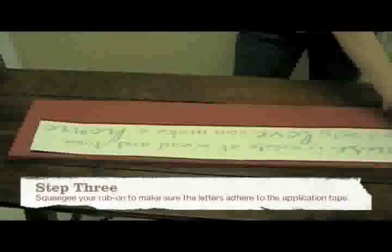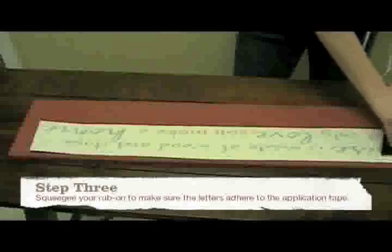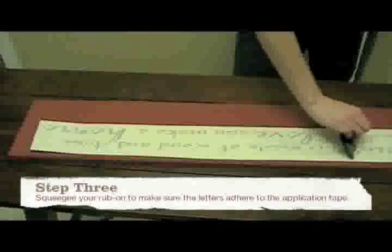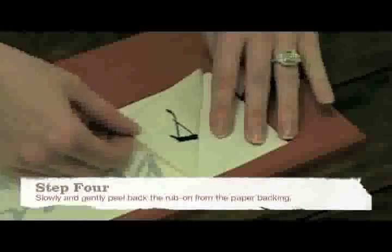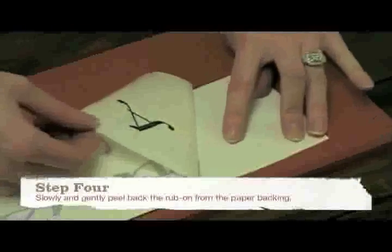Step 3. Squeegee your rub-on to make sure the letters adhere to the application tape. Step 4. Slowly and gently peel back the rub-on from the paper backing.